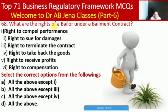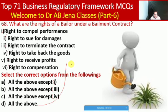Next MCQ: what are the rights of a bailor under a bailment contract? Options include: right to compel performance, right to claim damages, right to terminate the contract, right to take back the goods, right to receive profits, and right to complain. Select the correct option: all except one, all except three, all except four, or all of the above. Here D is the right option — all of the above are rights of a bailor under a bailment contract. Next MCQ: a pledge is a contract of what? Whether guarantee, mortgage, bailment, or agency. Here C is the right option — a pledge is a contract of bailment.